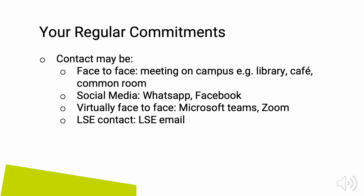Contact can take different forms and this is a positive thing. Try to find out what works for you and your mentees. Remember, everyone is different, so in your small group of mentees they may have different preferences. Contact may be face to face, such as meeting on campus, in the library, a cafe, or maybe you have a department or common room. You might choose to use social media like Facebook or WhatsApp. Lots of mentors have reported great successes with WhatsApp groups, and often find that over time mentees end up supporting and answering each other's questions instead of the mentor having to step in all the time. You might choose to meet virtually face to face using Microsoft Teams or Zoom, or just keep to LSE contact and use the LSE email.